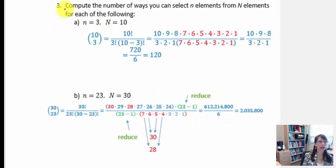In our final example, it's asking us to compute the number of ways you can select n elements from N elements for each of the following. So instead of giving us originally the parentheses notation, we are given the lowercase value of 3. That means we want 3 elements in the group. Capital N equal to 10 means there are 10 elements total to work with.